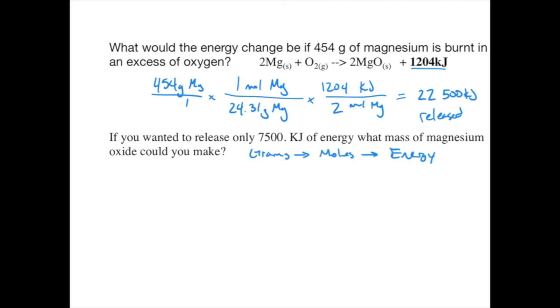But stoichiometry is a reversible process. And this second example is one where, in fact, instead of starting with grams of a substance and converting to energy, you start with energy of a substance and convert back to grams, because it says, what mass of magnesium oxide could you make with this much energy? So I'm going to think about this process in reverse. I'm going to take the energy and convert to moles. So I begin with 7,500 kilojoules of energy over 1, and I'm going to put kilojoules on the bottom and moles on the top. It's the kilojoules to moles conversion just inverted. I'm going to put 2 on top because it's the moles of MgO on top and 1204 on the bottom.